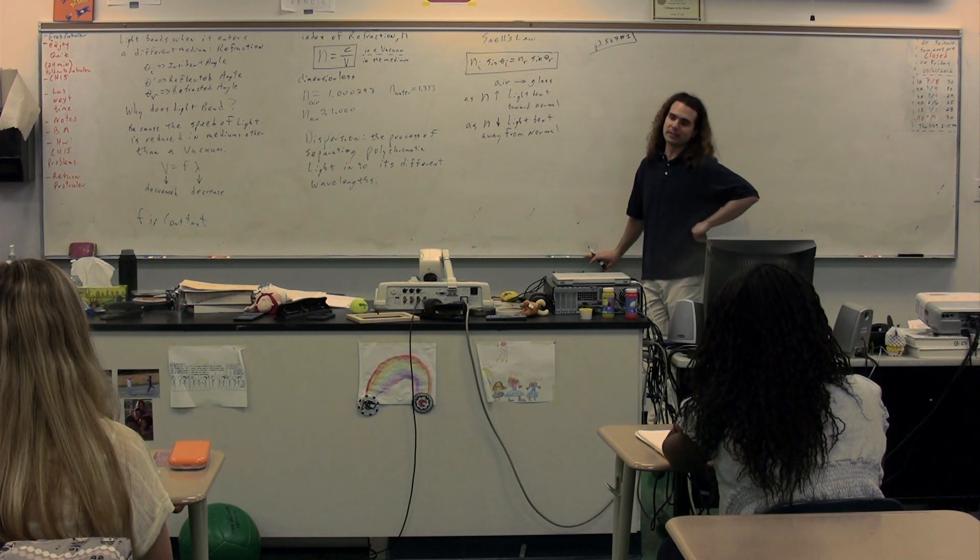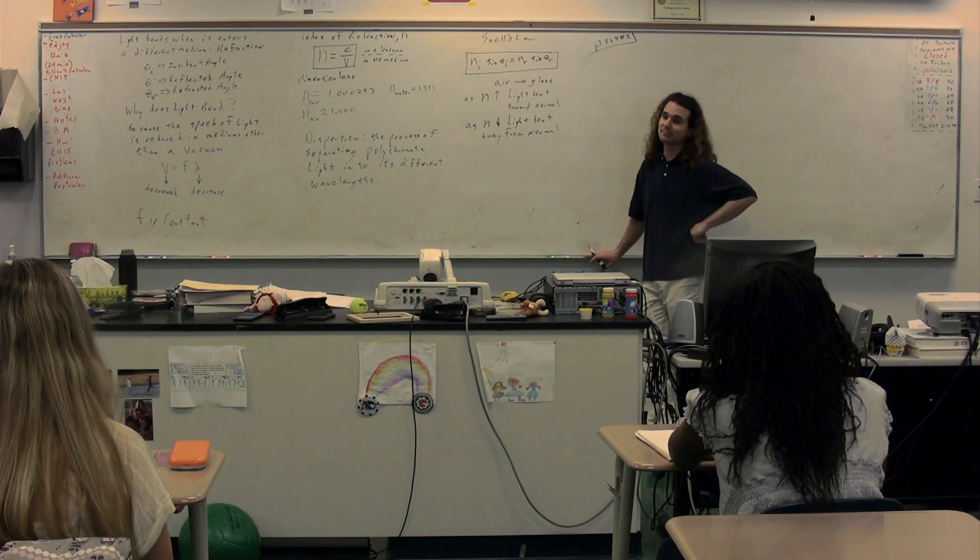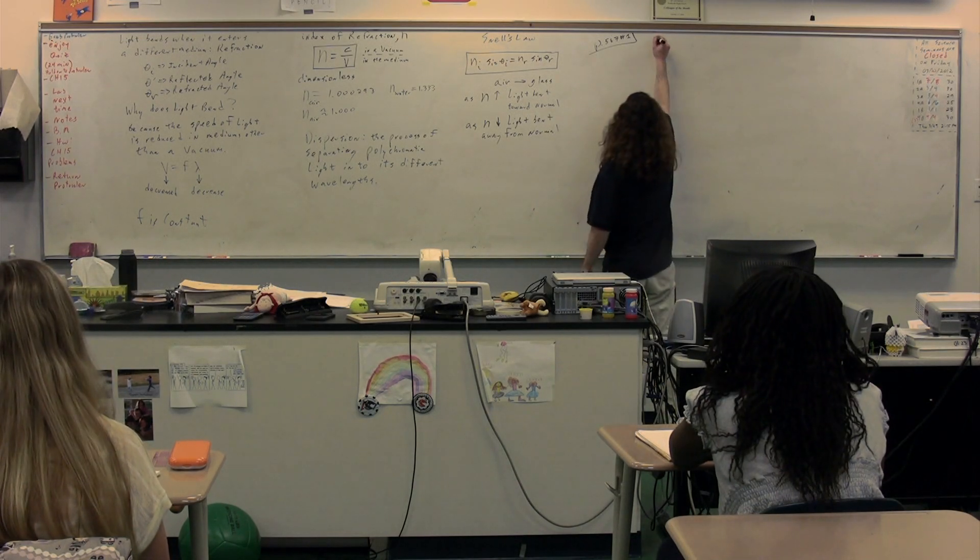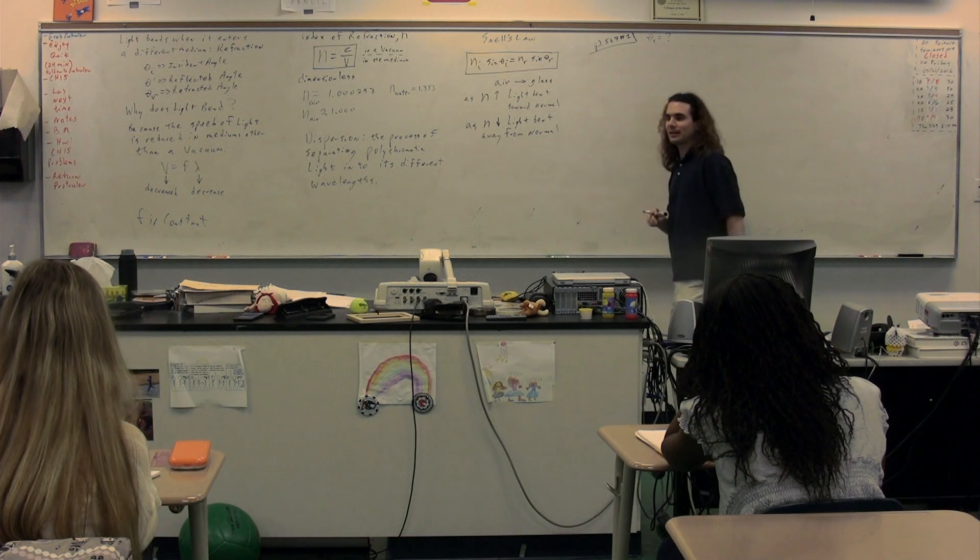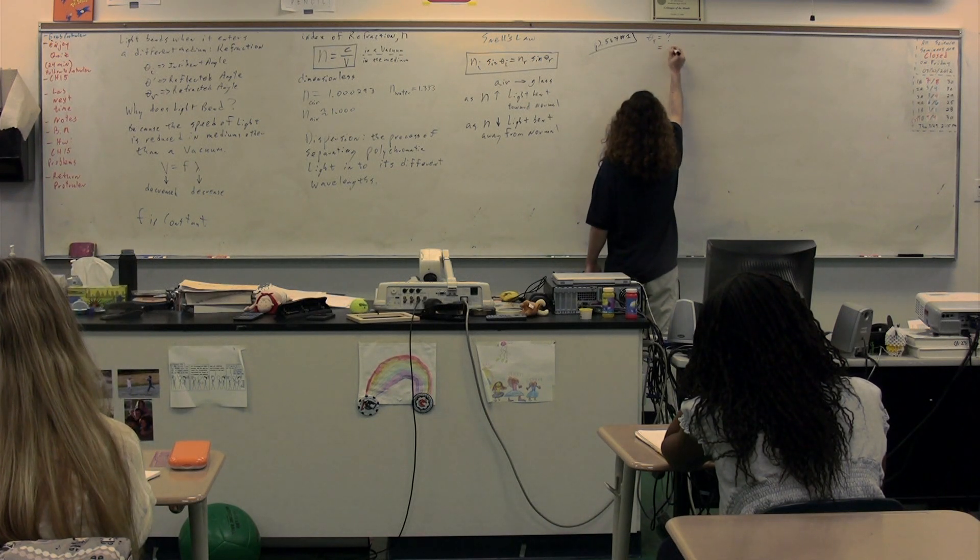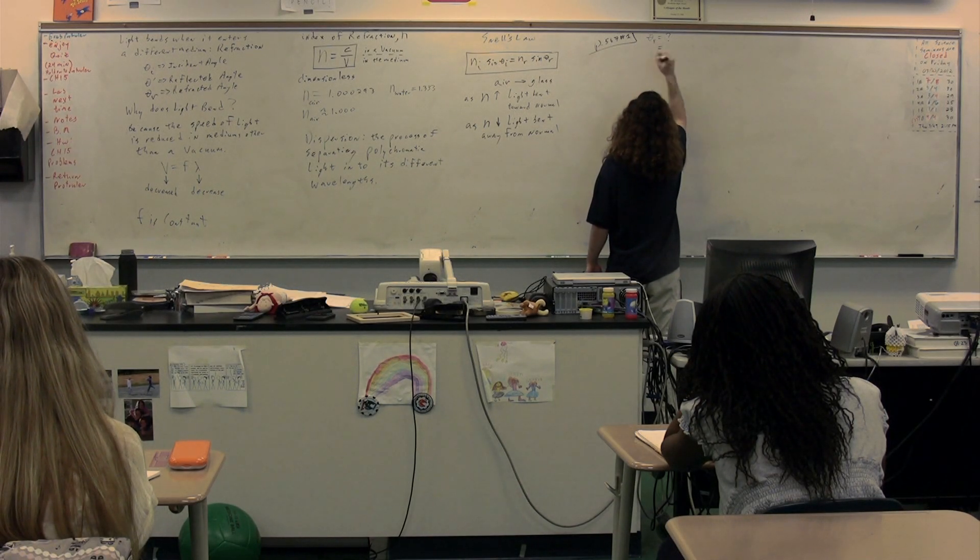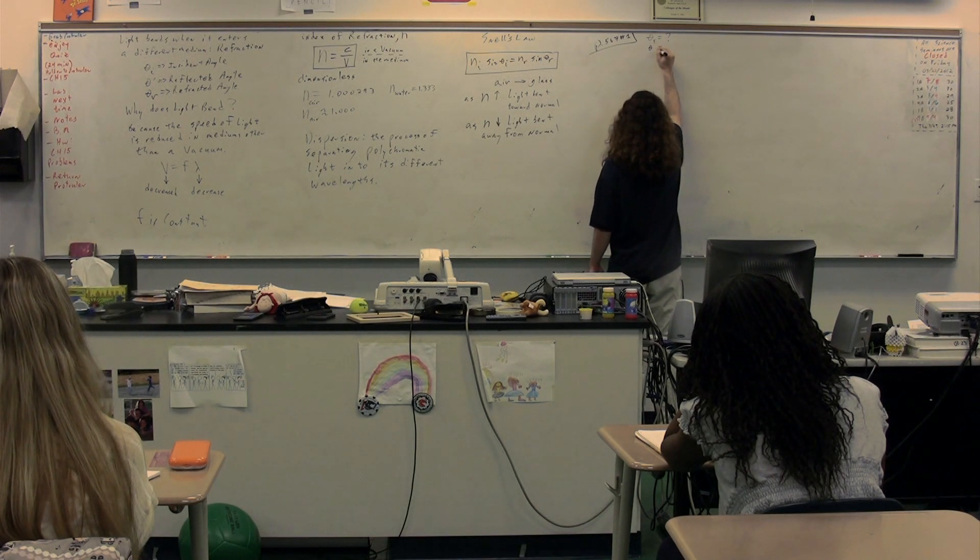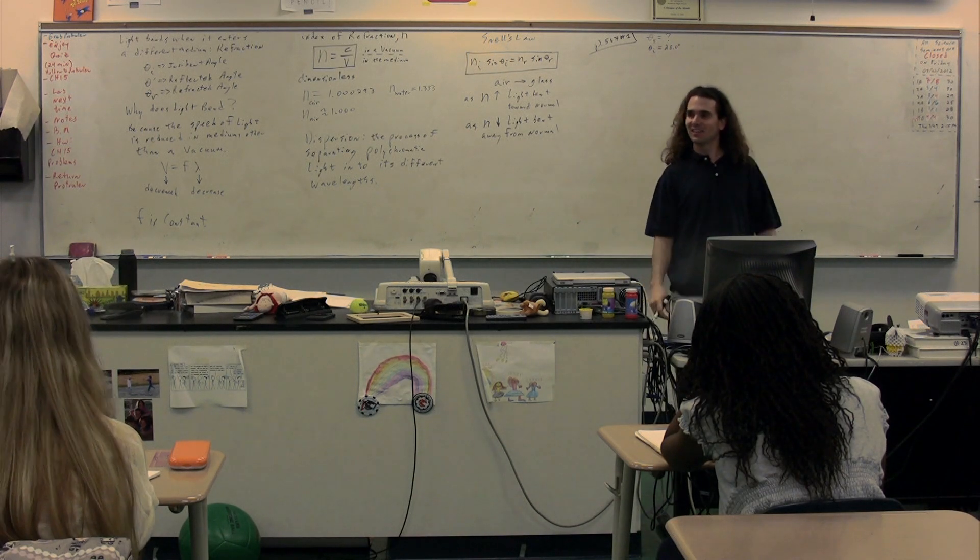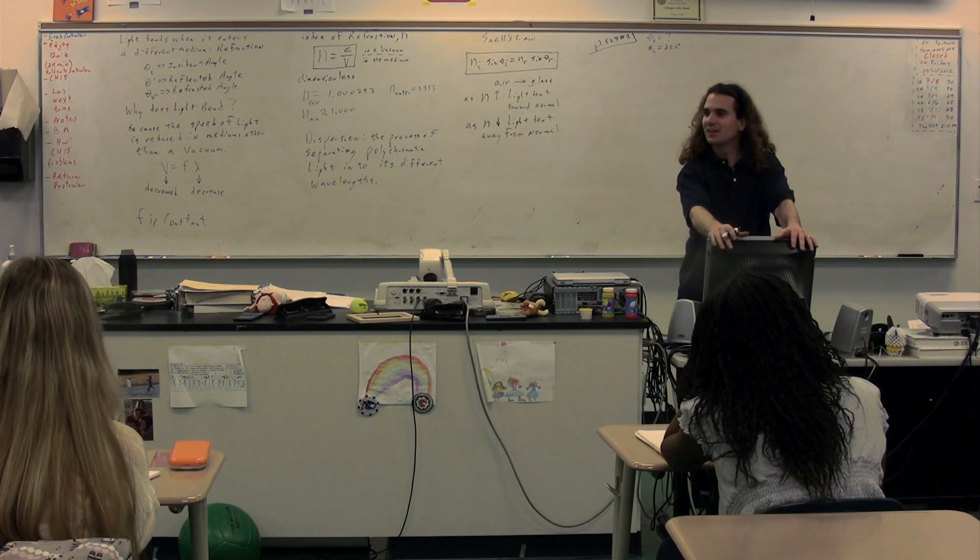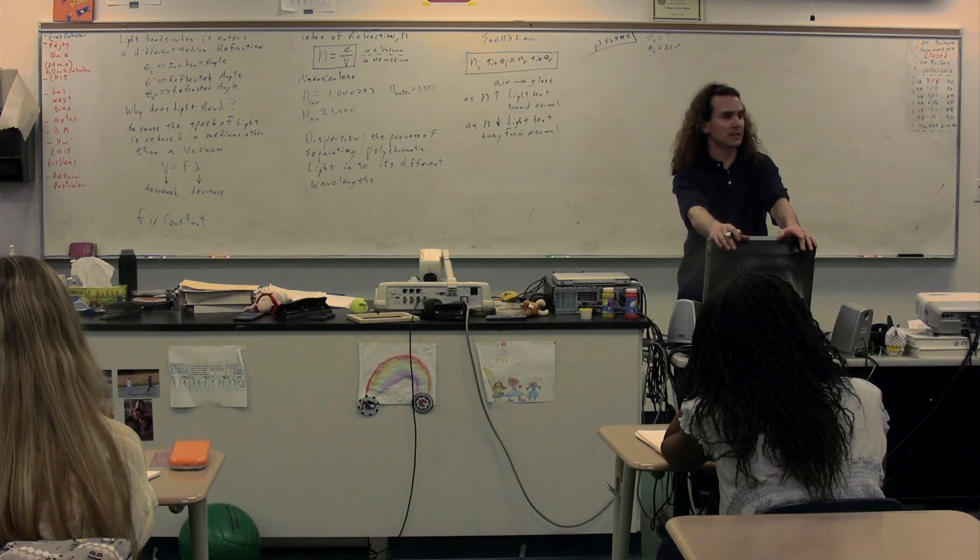So you have an angle of refraction. So theta sub r is equal to question mark. That's what we're solving for, the refractive angle. And then you're solving for the ray of light that enters a bucket of water from air at an angle of 25.0 degrees to normal. So that's theta I. What does I stand for? Incident angle. Incident. This is the incident angle, the light going toward the boundary here.